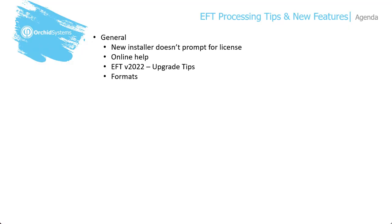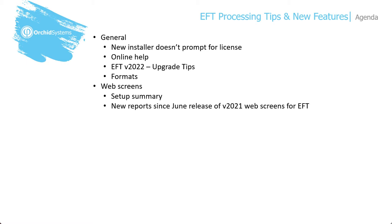Here is what we're going to cover. First, in line with the recent release of version 2022, we will discuss the changes to the install program which no longer prompts for a license, and go through changes to the help including the release of the online help for all Orchid modules. We will then summarize some upgrade tips. The web screens were the big new feature of 2021, so we will summarize the setup and show the new reports released since the initial release of the web screens earlier this year.